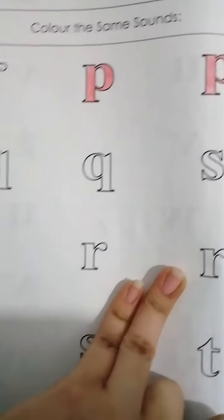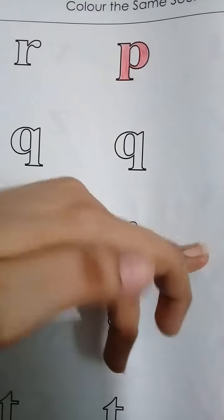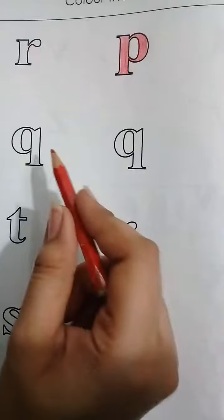Like this. Now come to the next line - there are three sounds here, these are the same, then we color.